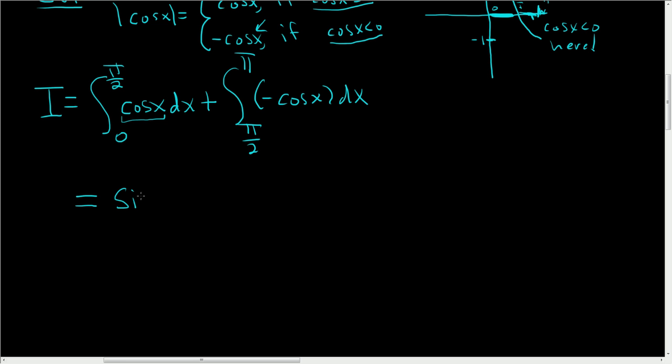Well, sine. So this is sine x. And it's going to be evaluated from 0 to pi over 2. And this will be added to, well, here we'll just have negative sine x. And this will be evaluated from pi over 2 to pi.